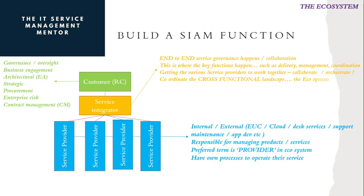If we look at the customer layer first, the customer would typically hang on to a number of areas known as retained capabilities. From my experience, it's been governance, oversight, business engagement type activities, enterprise architecture in particular, but anything architecture-wise, anything strategic. Procurement I've seen at both the service integrator layer and the customer layer. Certainly enterprise risk is an enterprise activity and the customer would want to hang on to that, and then contract management.